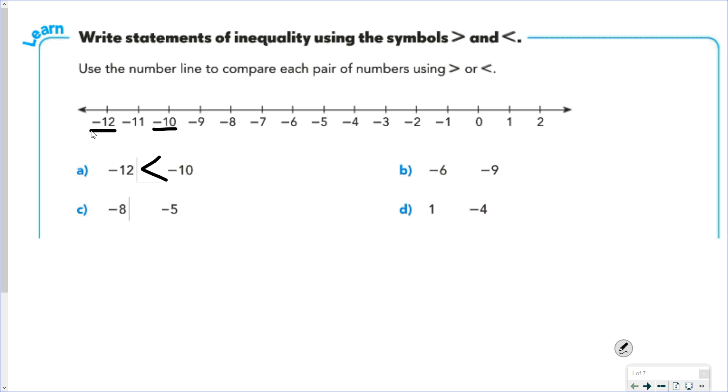For part B, negative 6 is farther right than negative 9, so negative 6 is greater than negative 9. For part C, negative 8 is farther left than negative 5, so negative 8 is less than negative 5.